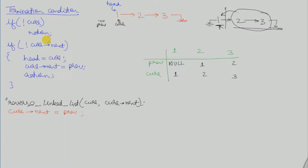The second termination condition is: if not current.next — meaning if it is the last element — then we will make the last element of the linked list our head. Then current.next will be set equal to previous, meaning the last node becomes the head and its next pointer is made to point to its previous node, and we return.